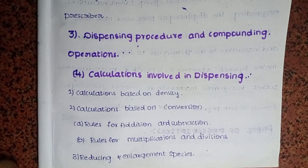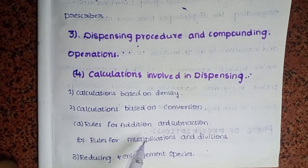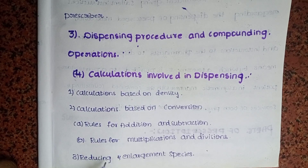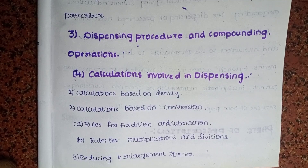I have already posted what the conversion table is — that is the empirical calculation. In conversions there are rules for addition and subtraction, rules for multiplication and division. The third one is reducing and enlargement of species. These are the calculations involved in dispensing.